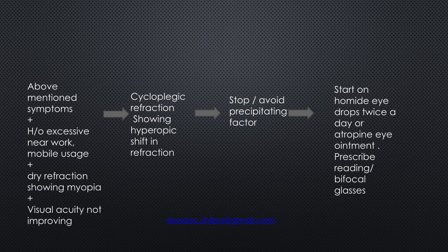Ask the child to avoid precipitating factors. Start on a cycloplegic eye drop like Homide twice a day, or atropine 1% ointment can be prescribed. You can also prescribe reading or bifocal glasses and call the child for follow-up.